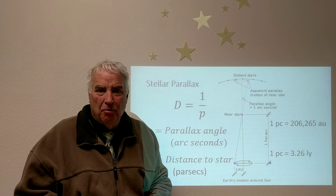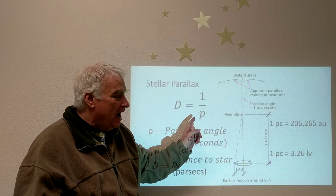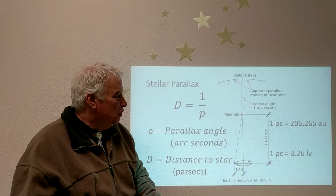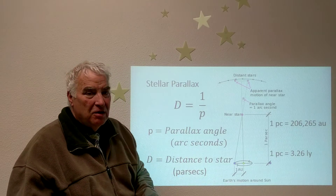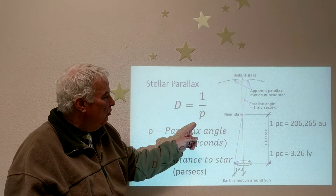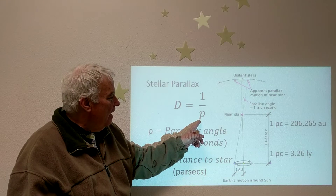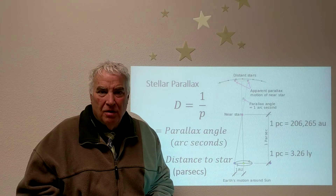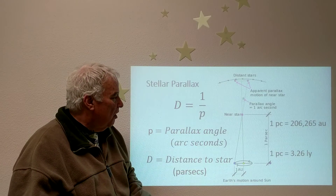So if the parallax angle is one arc second, the distance will be one parsec. If the parallax angle is 0.5 arc seconds — half an arc second, which would be the case for a nearby star — then the distance would be two parsecs. And one more example: if the parallax angle is 0.2 arc seconds, one fifth of an arc second, the distance would be five parsecs.